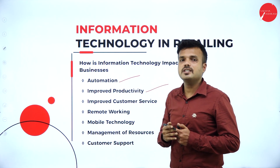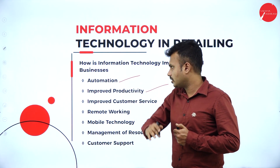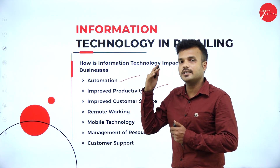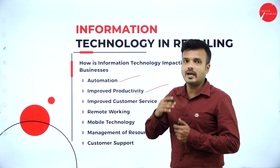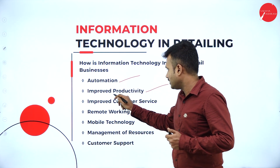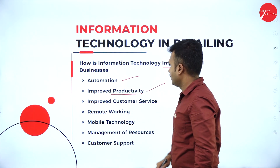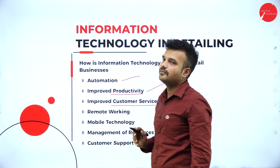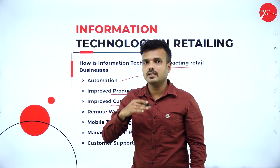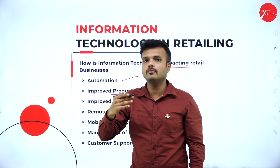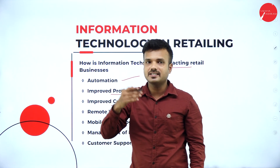Improved productivity — information technology gives real-time information about the stock of goods, sales of goods, and purchase of goods. Based on historical data, we can make a strategic plan, and all processes in a retail unit happen in a systematic way, increasing productivity. Improved customer service — from information technology, customer service has improved compared to earlier days, with an automated system providing 24 into 7 availability of services.